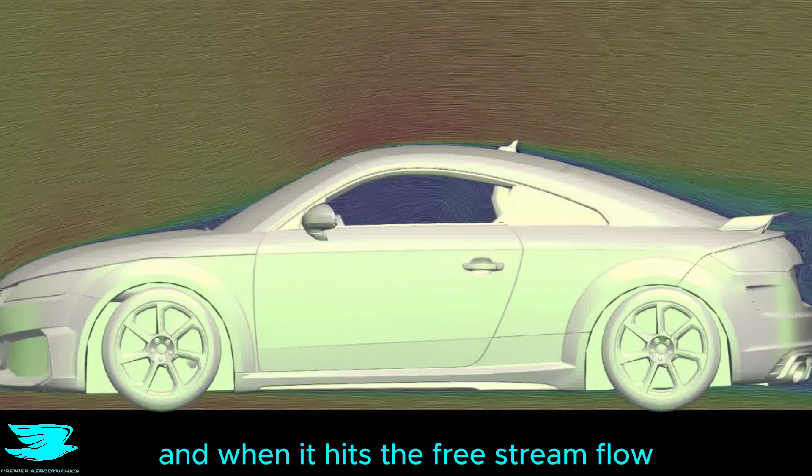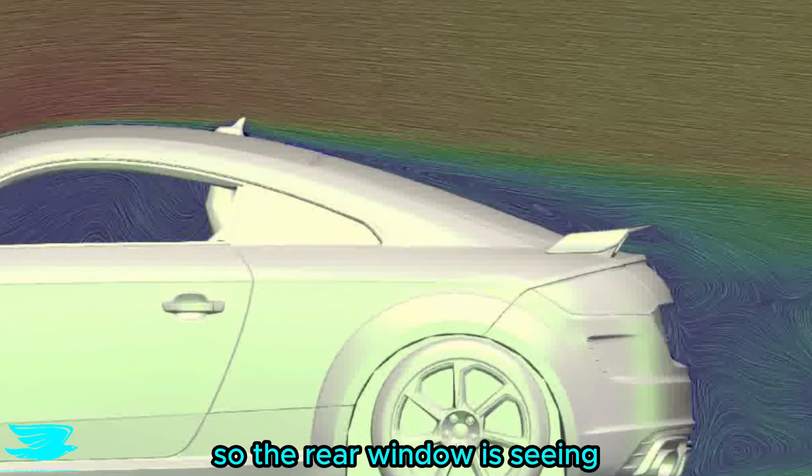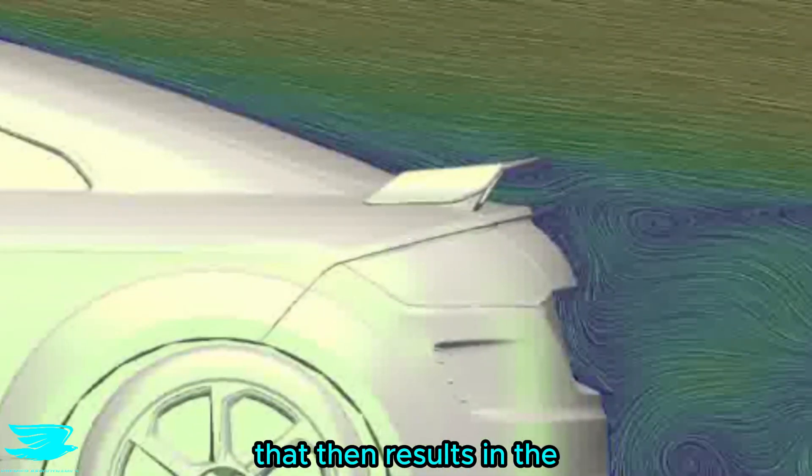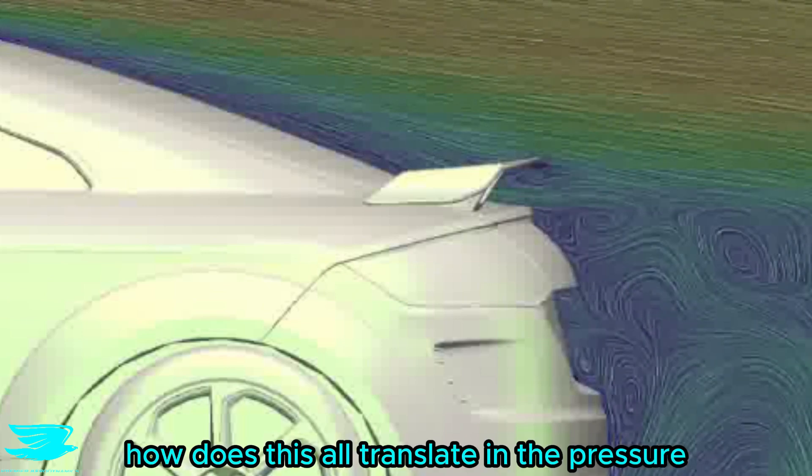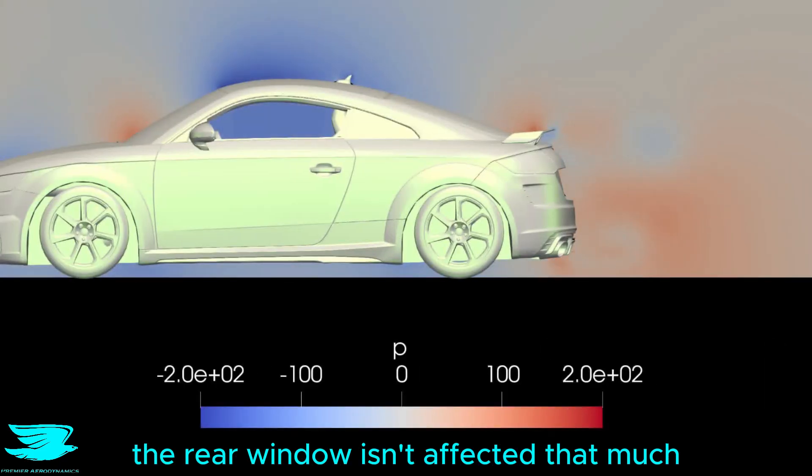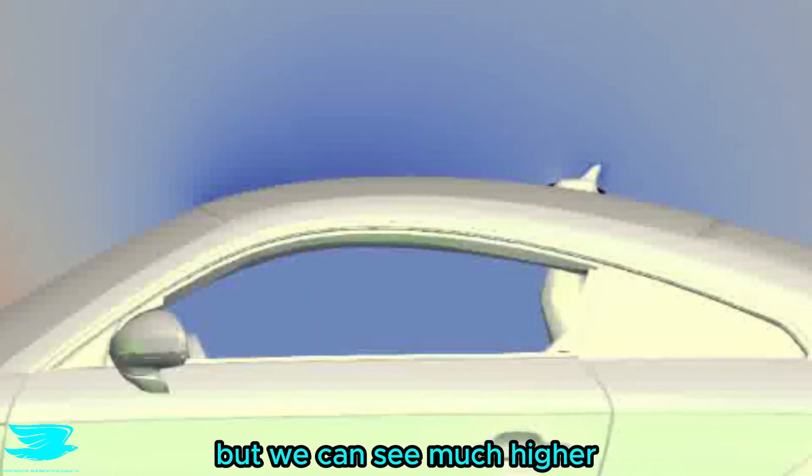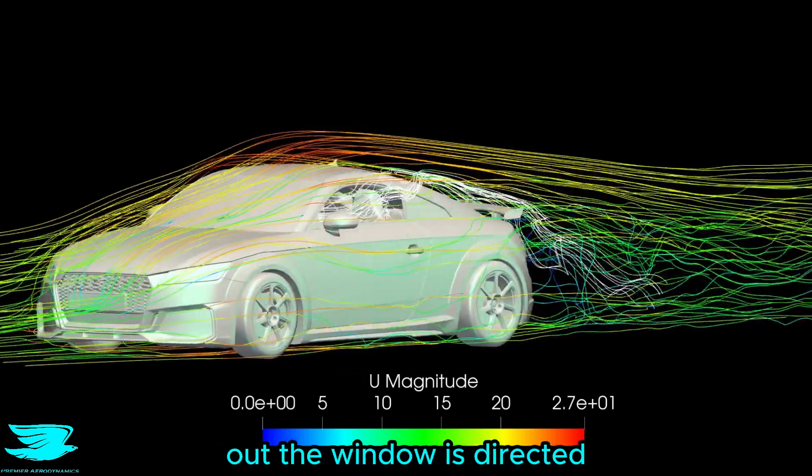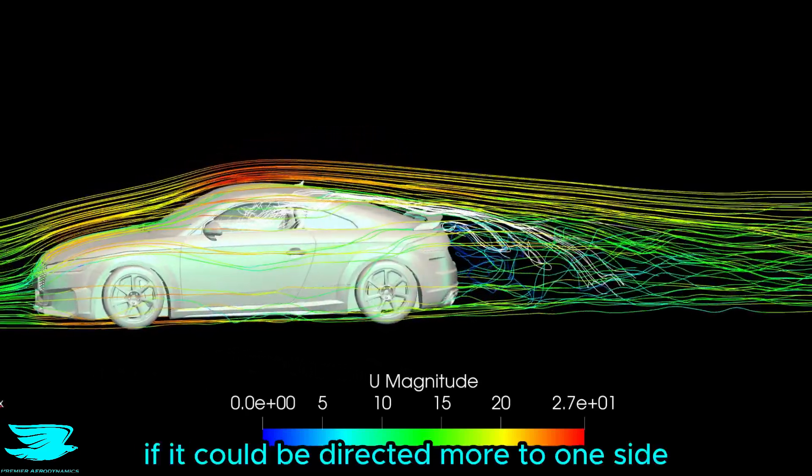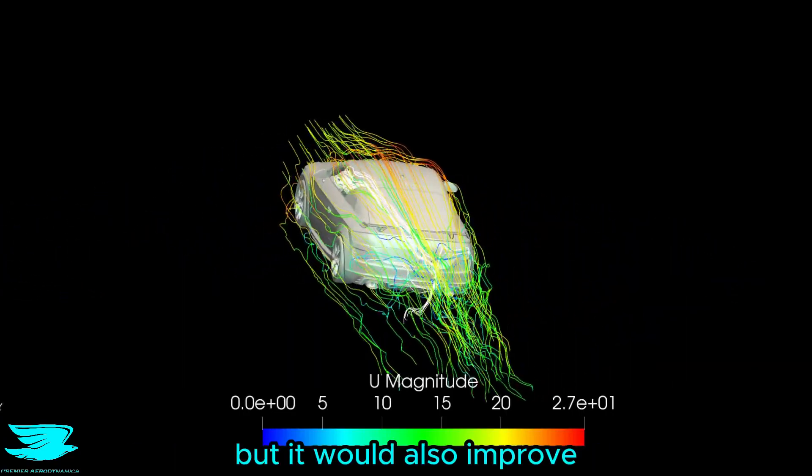And when it hits the freestream flow, it is being accelerated by it, but it doesn't get up to speed. So the rear window is seeing much slower flow now. That then results in the rear wing seeing even slower flow and potentially reducing its downforce. How does this all translate in the pressure? The rear window isn't affected that much. Perhaps the really low pressure region over the roof is truncated a little, but we can see much higher pressure under the wing. So the slower flow hitting it reduces its downforce. And that is because of how the flow out the window is directed. If it could be directed more to one side, that would create some torque on the car, but it would also improve the rear wing's performance.